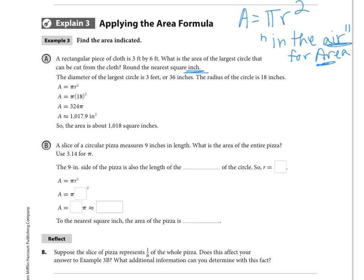For part B, we are told that a slice of circular pizza, a slice of a circular pizza, measures 9 inches in length. So along one side it is 9 inches long. We want to know what is the area of the entire circular pizza. We're using 3.14 again here for pi. So it says the 9-inch side of the pizza is also the length of the—well, if we think about cutting out a slice, the side of the piece of pizza is the same thing as the radius, of course, of the circle.